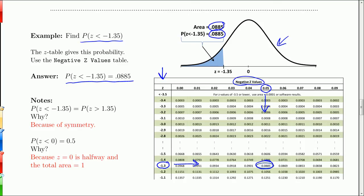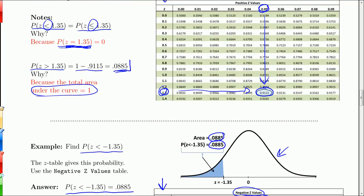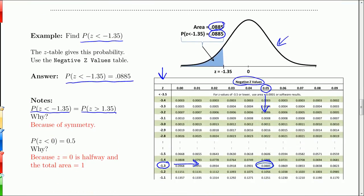A couple of notes: the probability that z is less than negative 1.35 turned out to be the same as the probability that z is greater than 1.35, which was 0.0885. The reason is that the curves are perfectly symmetric — negative 1.35 has a mirror at positive 1.35, and those areas are equal due to symmetry.